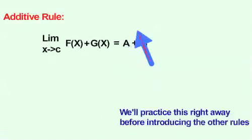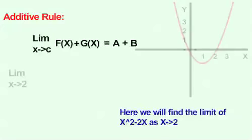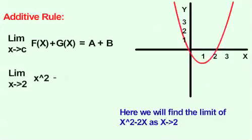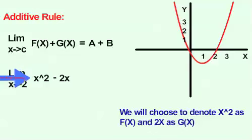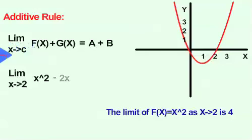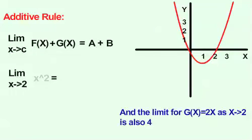We'll practice this right away before introducing the other rules. Here, we will find the limit of x squared minus 2x as x approaches 2. We will choose to assign x squared as f of x and 2x as g of x. The limit of f of x equals x squared as x approaches 2 is 4, and the limit for g of x equals 2x as x approaches 2 is also 4.